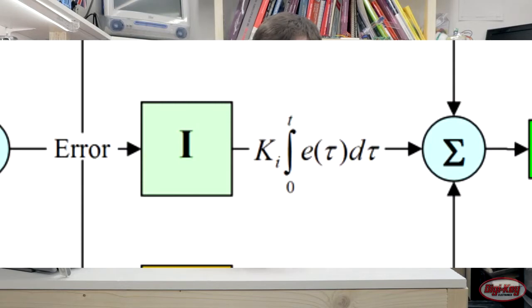The integral block takes the signal and integrates it over time with previous results. The really cool thing about the integral part is that it accumulates all of the past errors that have ever existed, giving you an indication of what your error has done over time. So over the entire journey, for example, if you've always been about five miles an hour under the speed, it will try and bump it up.